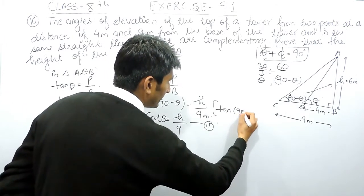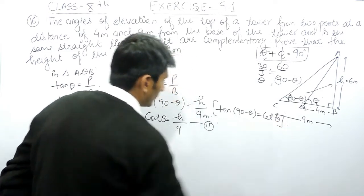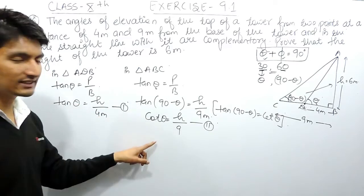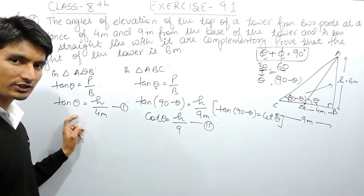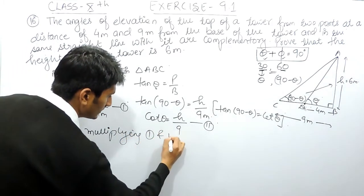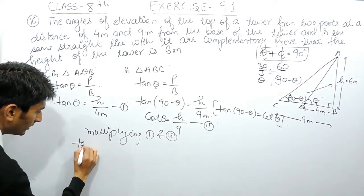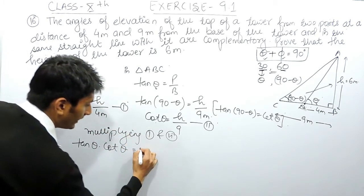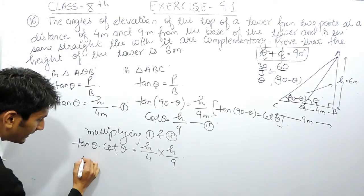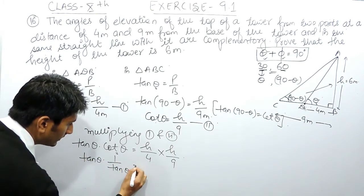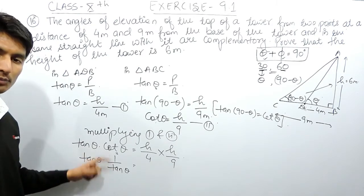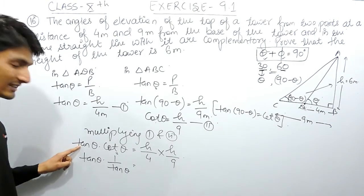Now we have two equations. In these kinds of problems, what we need to do is multiply the two equations together. Multiplying equation one and equation two: the left-hand sides multiply to give tan theta multiplied by cot theta, and the right-hand sides give (h/4) multiplied by (h/9). Now, cot theta equals 1 upon tan theta — they are reciprocals of each other — so tan theta times cot theta equals 1.